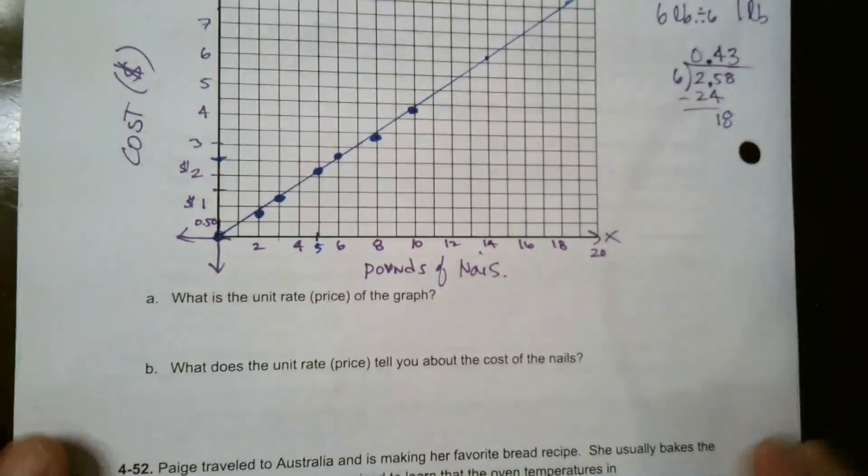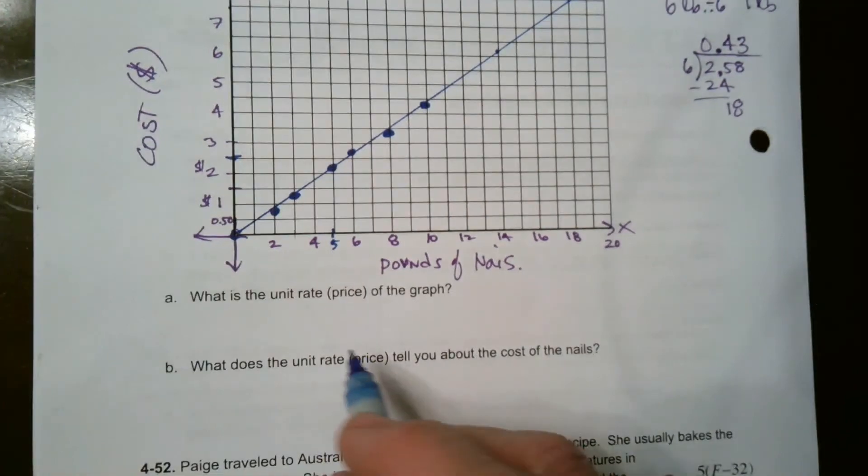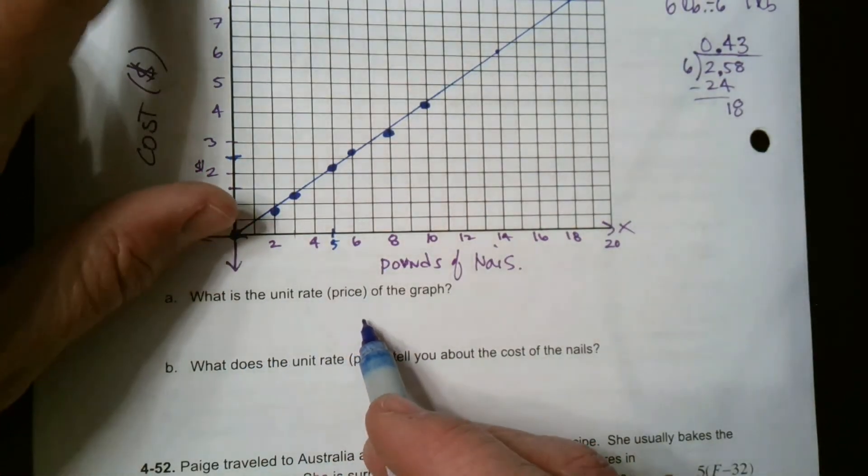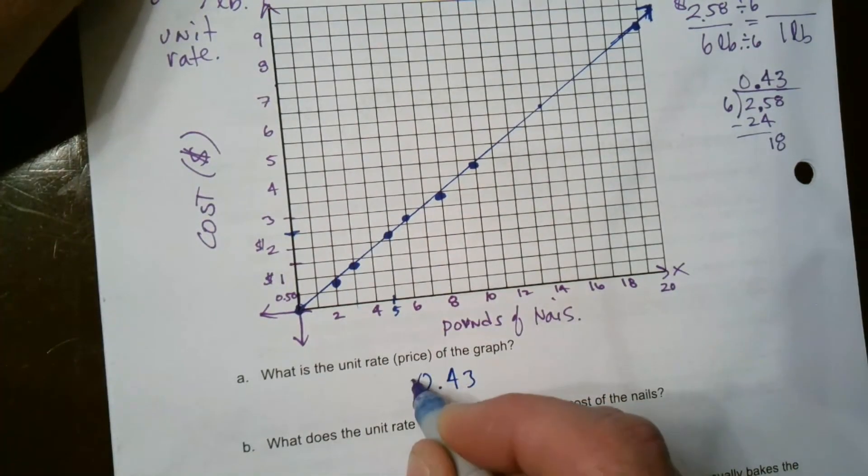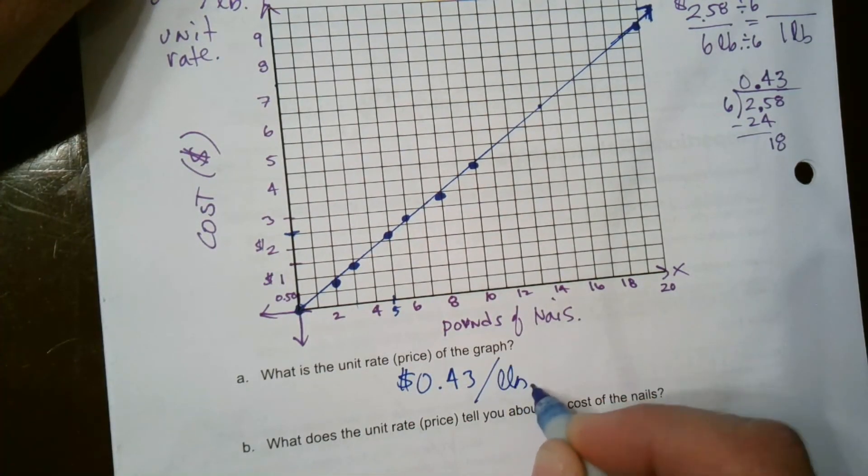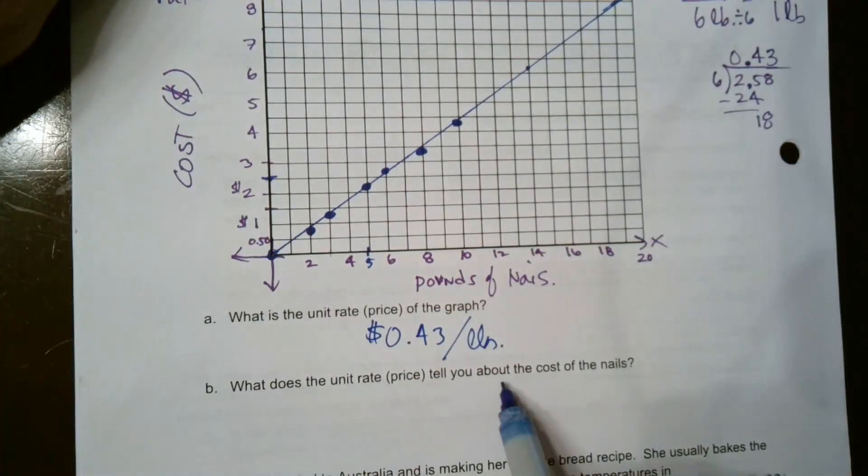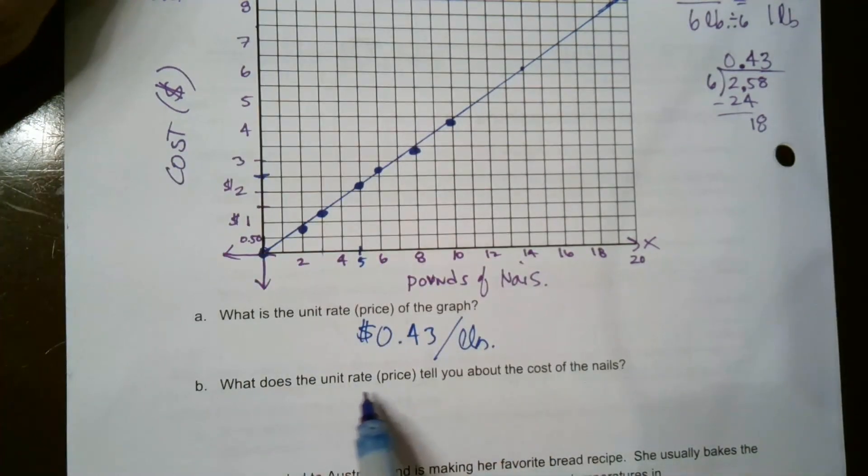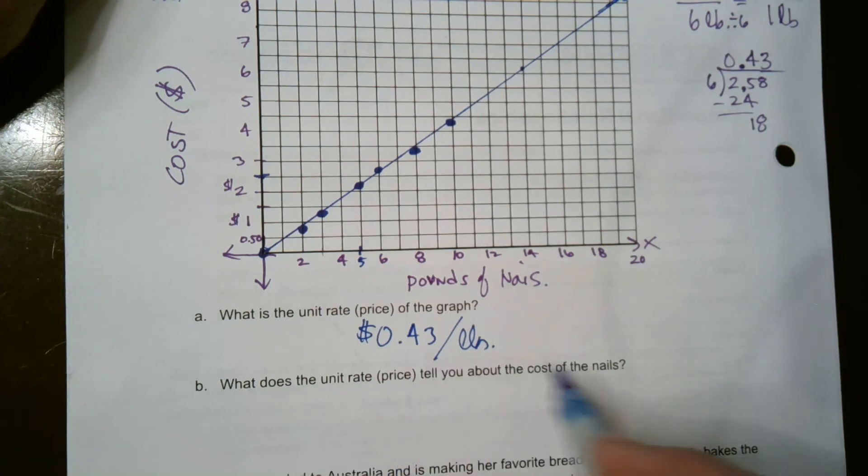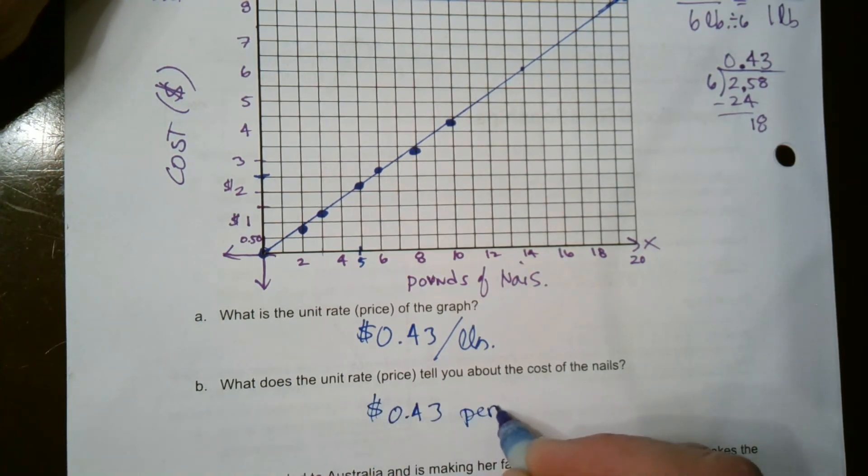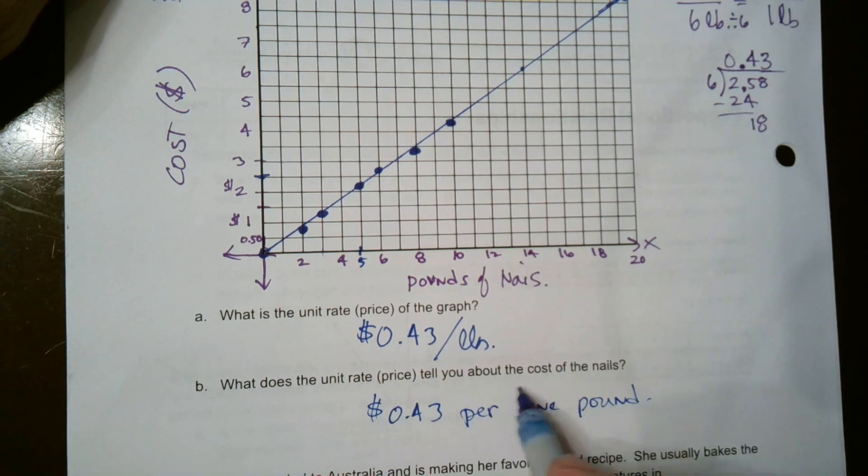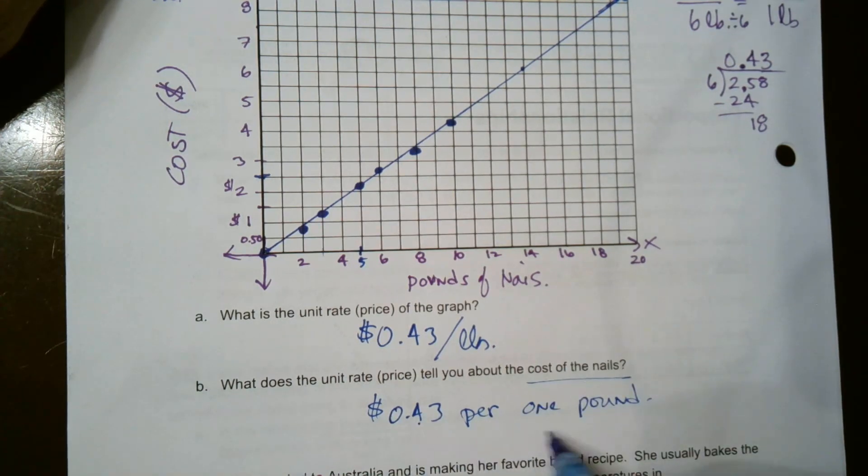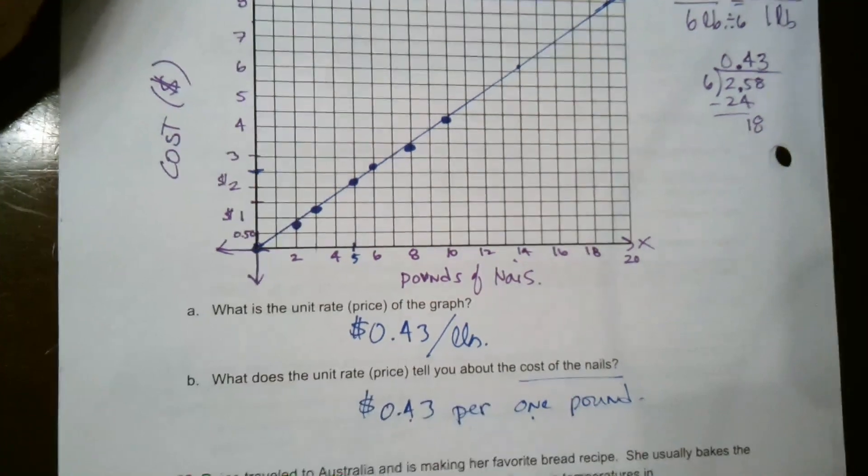I'm not quite done. What is the unit rate? We already did the unit rate. Our unit rate we said was 43 cents per pound. Then it says, what does the unit rate price tell you about the cost of nails? The unit rate says that it's 43 cents per one pound. That's what the unit rate price tells you about the cost of nails. It's that cost per one pound. There you go.